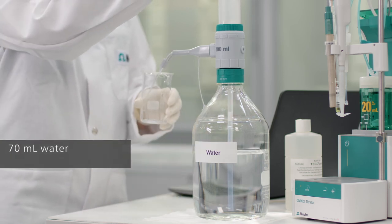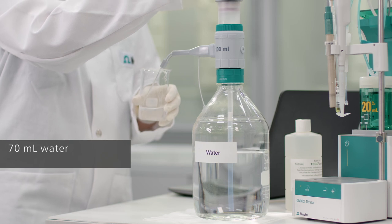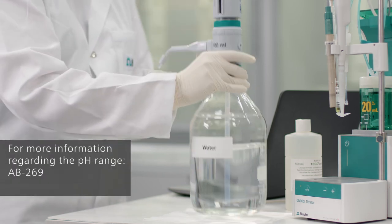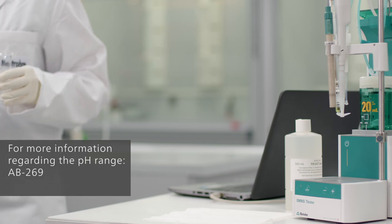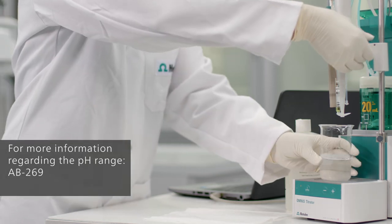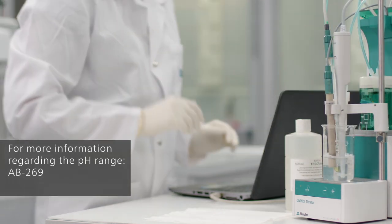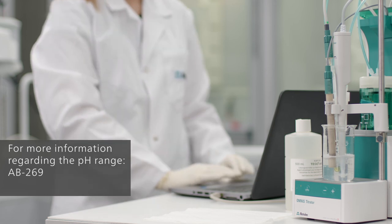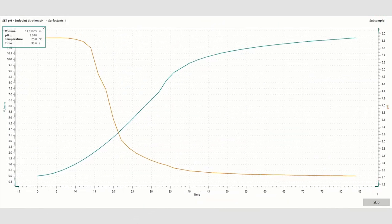The pH must be adjusted before the actual titration starts. For most anionic surfactants a pH of 2-3 is a good range, while for most cationic surfactants the pH should be adjusted to a range of 4 to 5. This is easy to do with a set pH titration.